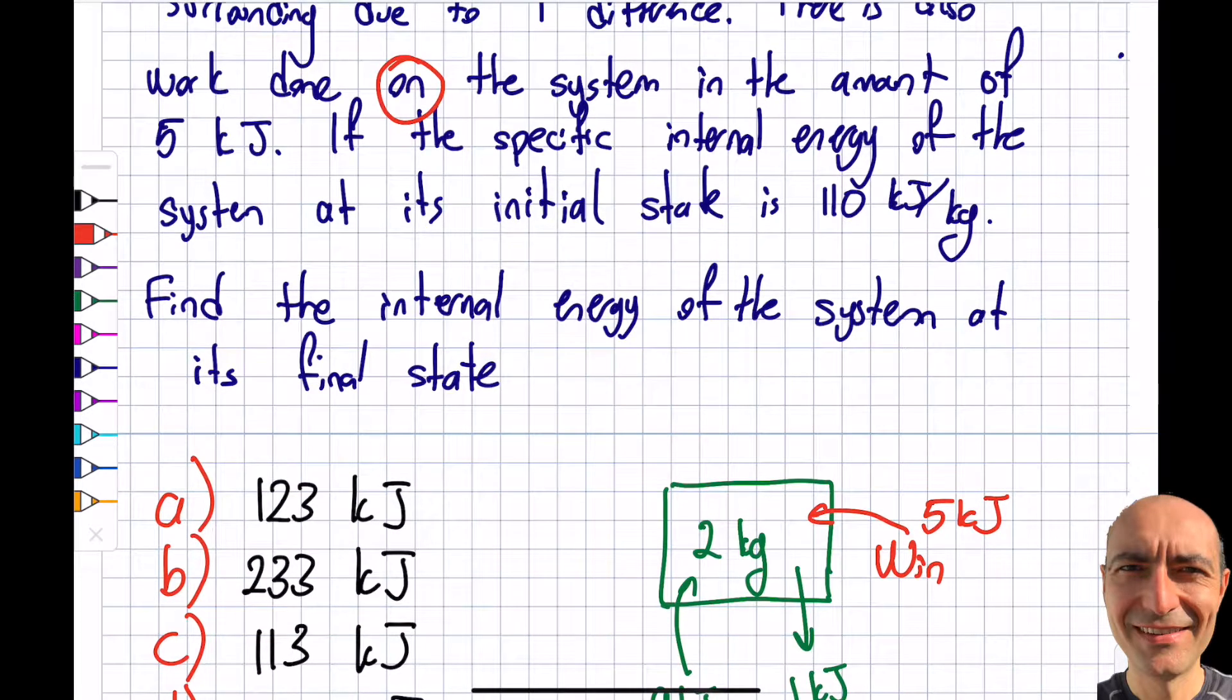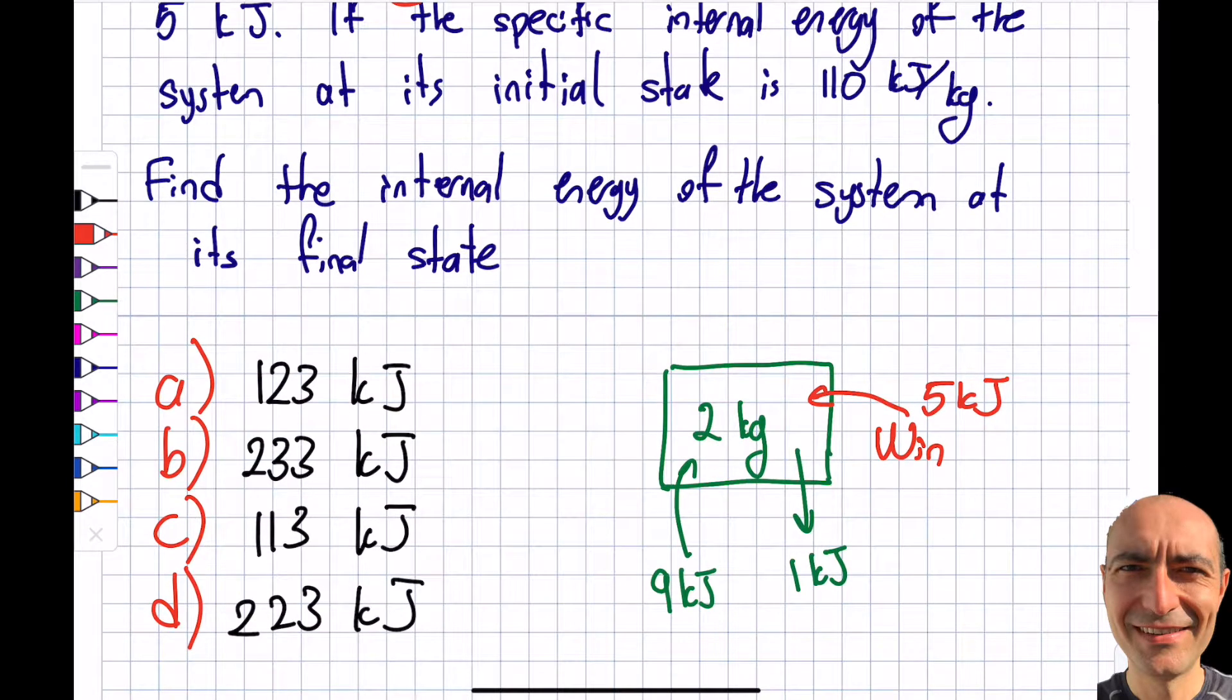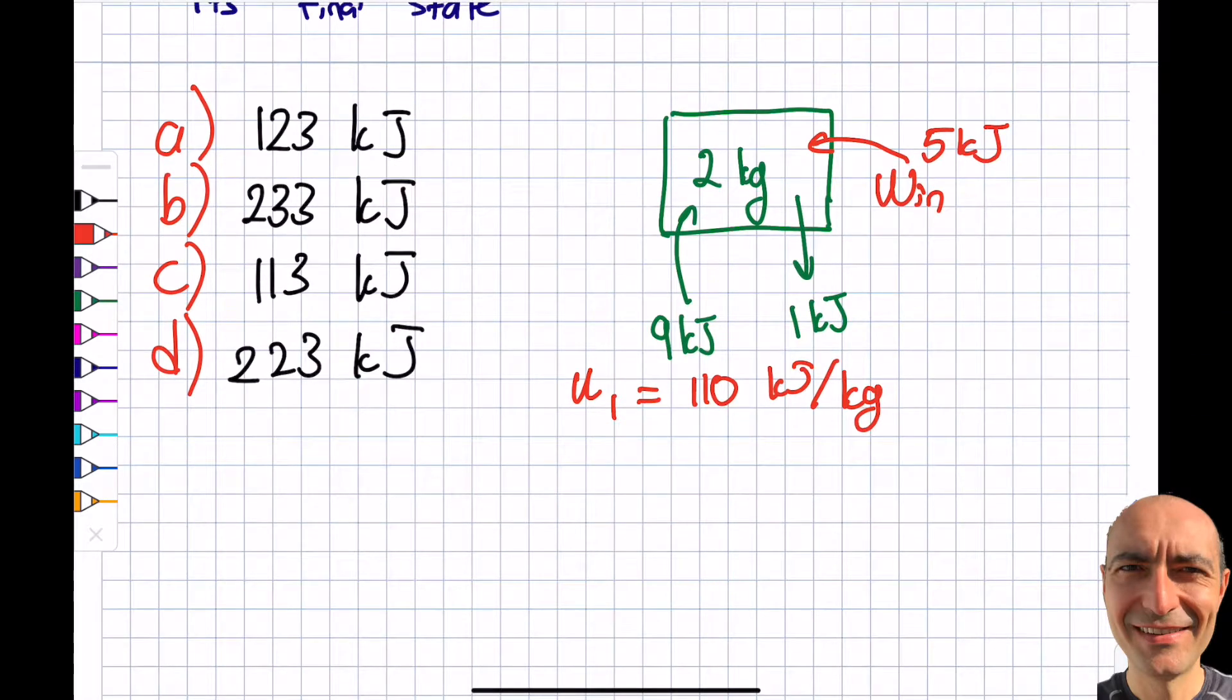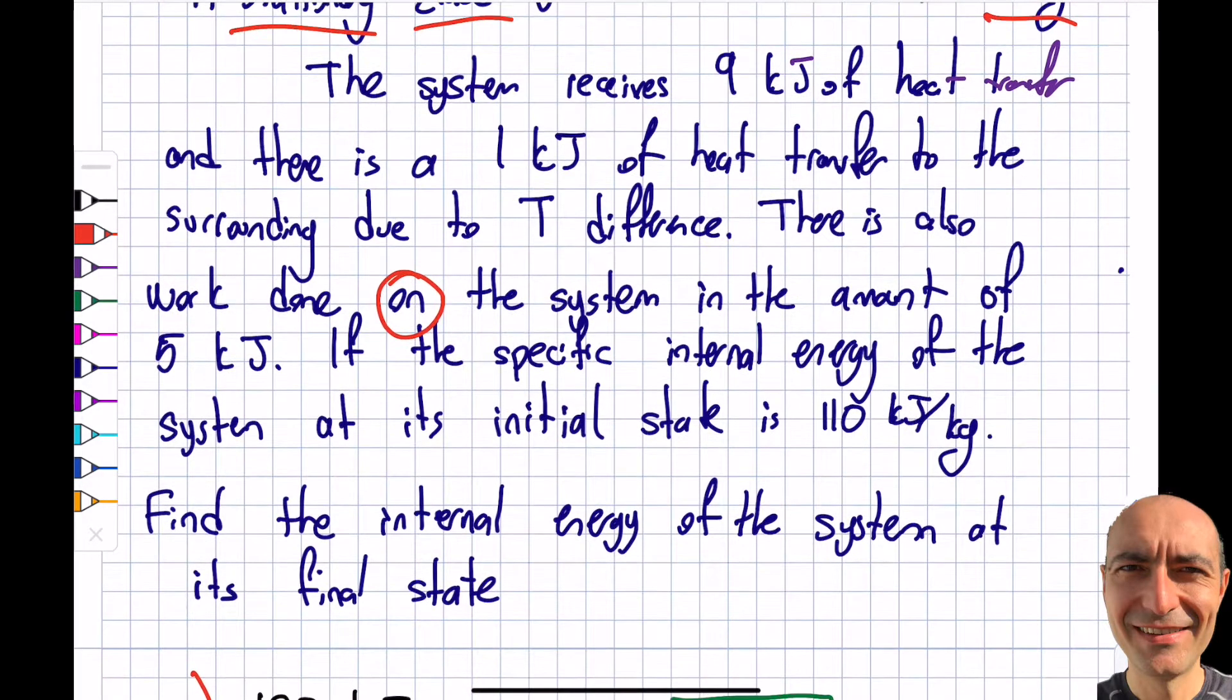You have to read carefully. If the specific internal energy of the system at its initial state is 110 kilojoules per kilogram—so this is my u1—find the internal energy of the system at its final state. Not specific internal energy, it's asking for the capital U2.